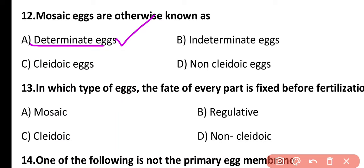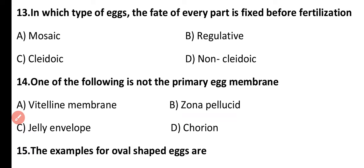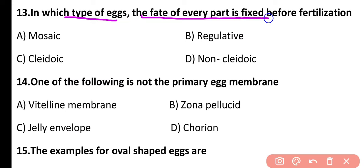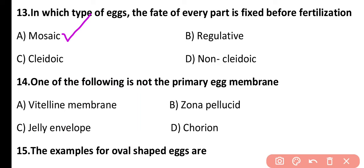Question 13. In which type of eggs is the fate of every part fixed before fertilization? Mosaic eggs, regulative eggs, cliodic eggs, or non-cliodic eggs? The correct answer is option A. In the case of mosaic eggs, or determinate eggs, the fate of every part of the egg is fixed before fertilization, while in the case of regulative eggs, the fate of every part is not fixed.